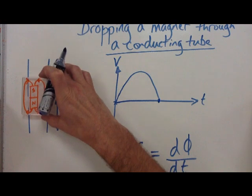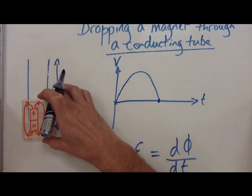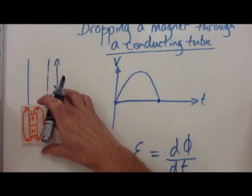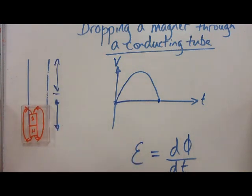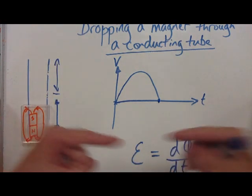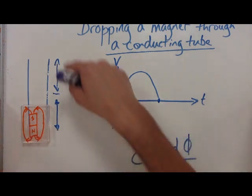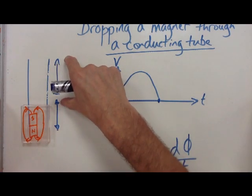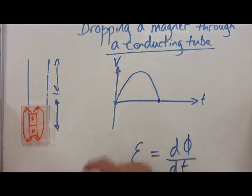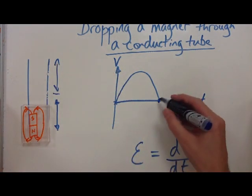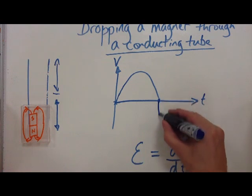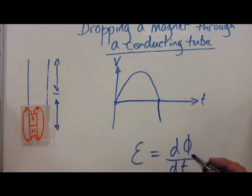As we continue down through the tube, now the south is winning. The field lines pushing inwards have got more of the tube that they can interact with, therefore they start to win, so the EMF actually goes the other way.